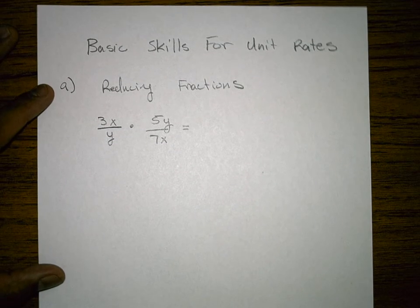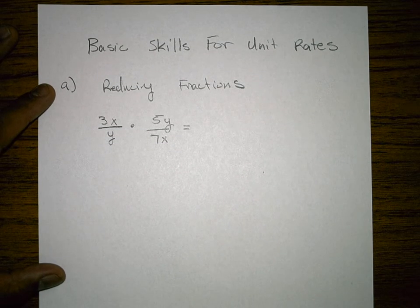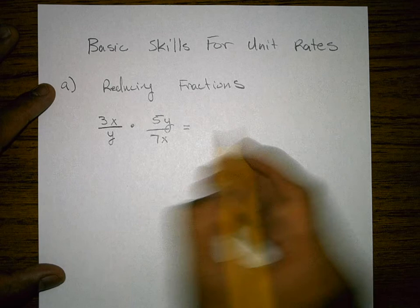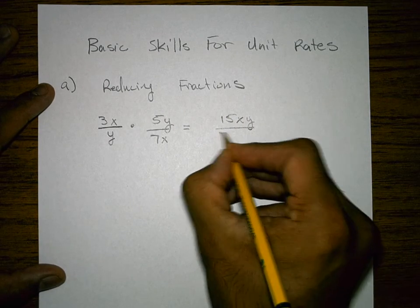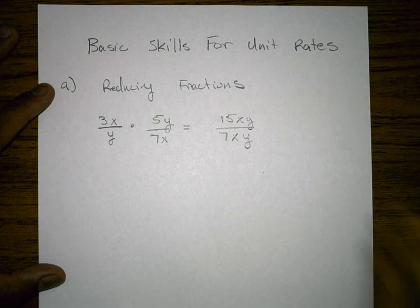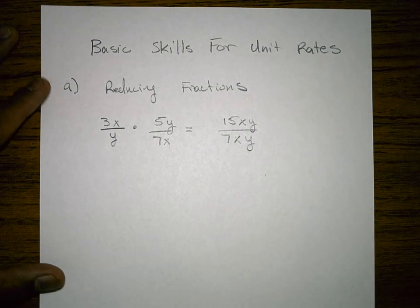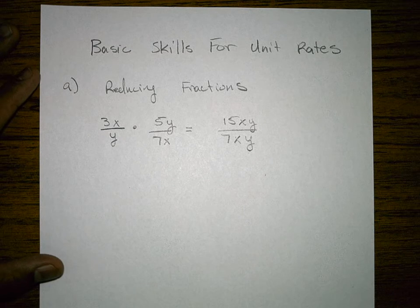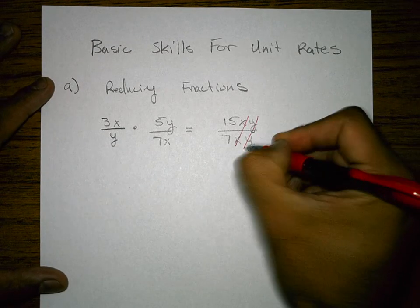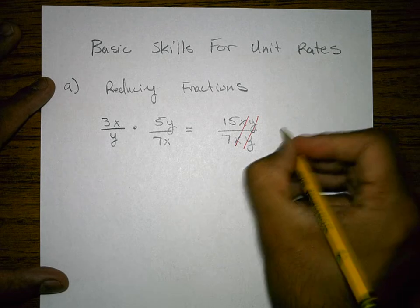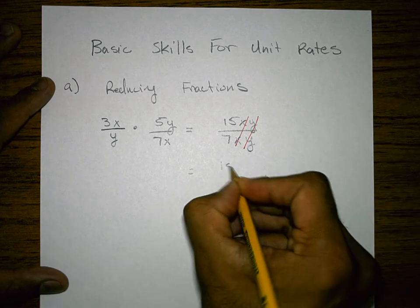If I gave you something like 3x over y times 5y over 7x and I wanted to work this problem out, I can do it a couple of different ways but a lot of people multiply straight across. That's how we multiply a fraction. I get 15xy over 7xy. And then from here I can reduce. This is all multiplication. So I can cross those out and reduce to a 1 and the answer is 15 over 7.